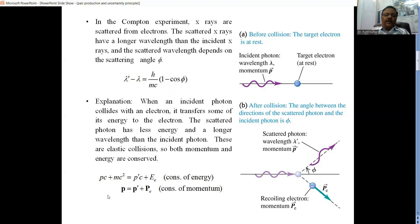By law of conservation of energy, we can reduce this expression. And by law of conservation of momentum, we have this expression where p is the momentum of the incident photon, p dash is the momentum of the scattered photon, and pe is the momentum of the electron that has been pushed.